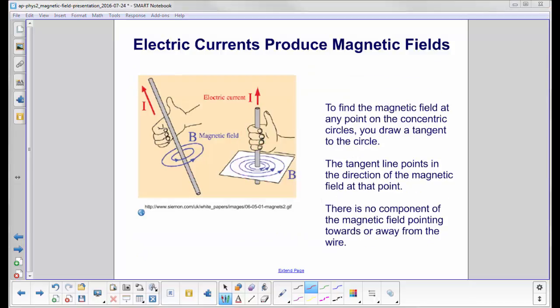To find the magnetic field at any point on these concentric circles, you draw a tangent to the circle. So if you want to find the magnetic field at this point, it would be pointing in that direction. At this point, pointing in that direction. You take the tangent. And by the way, there's not just one magnetic field here. The loops keep going, and they're infinitely close together. We're just representing it with one set of concentric loops.